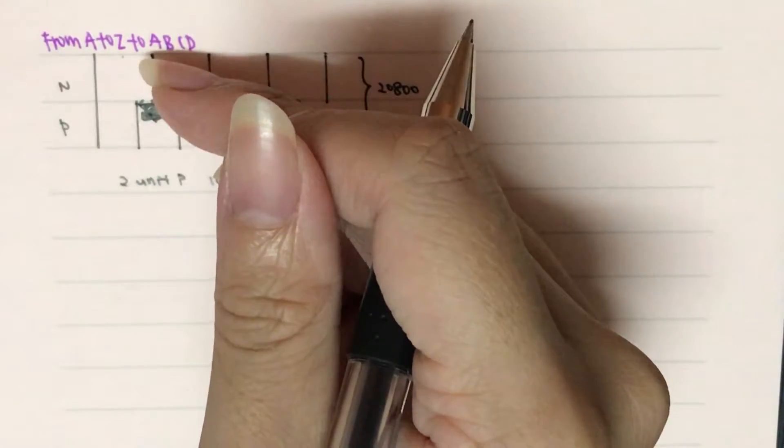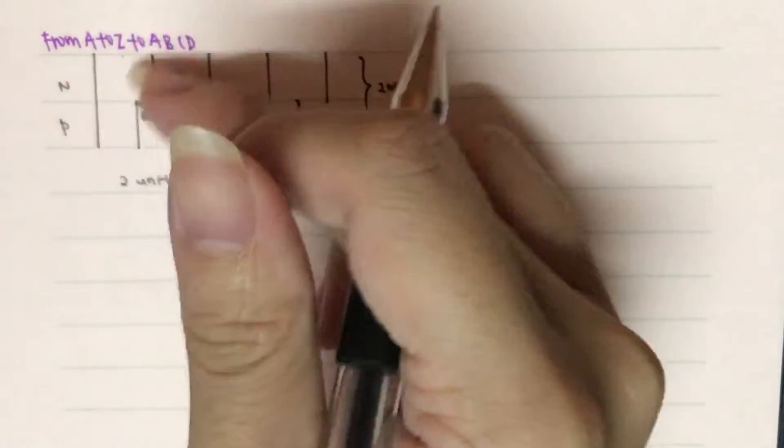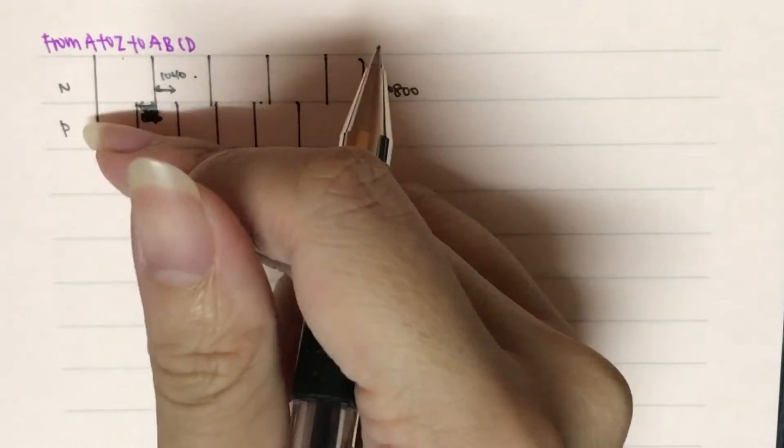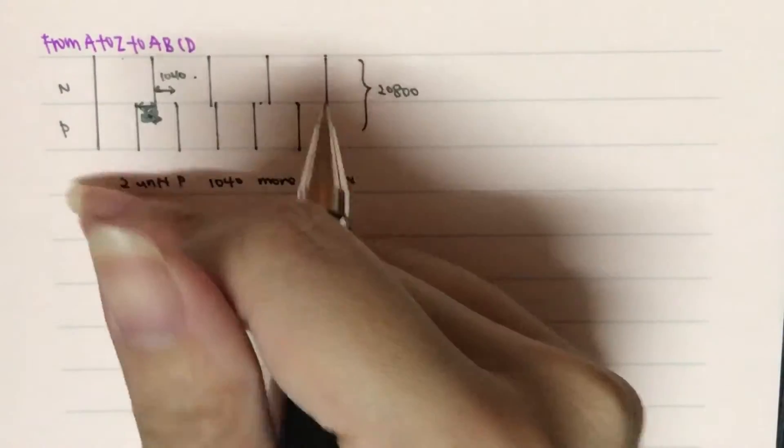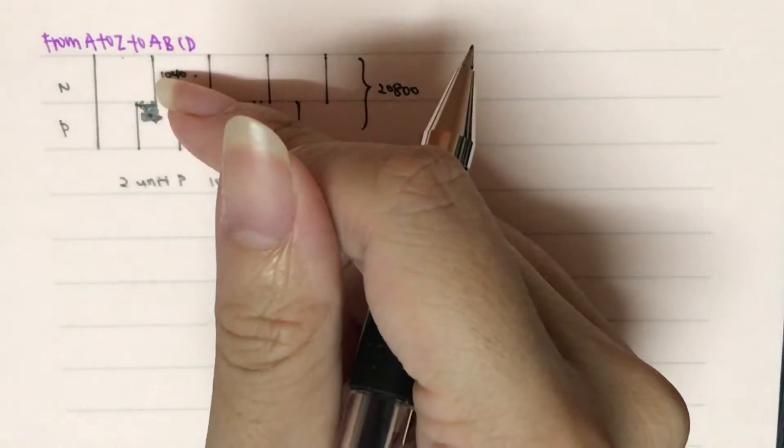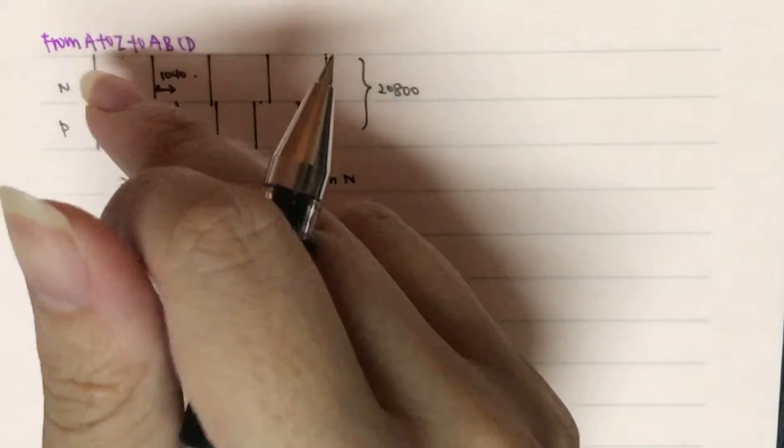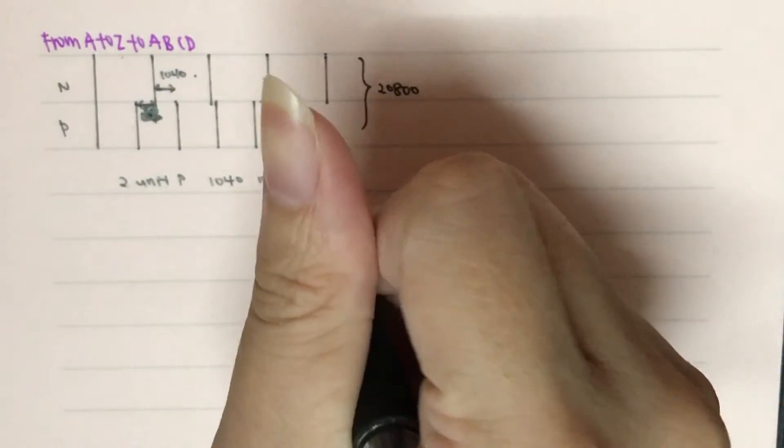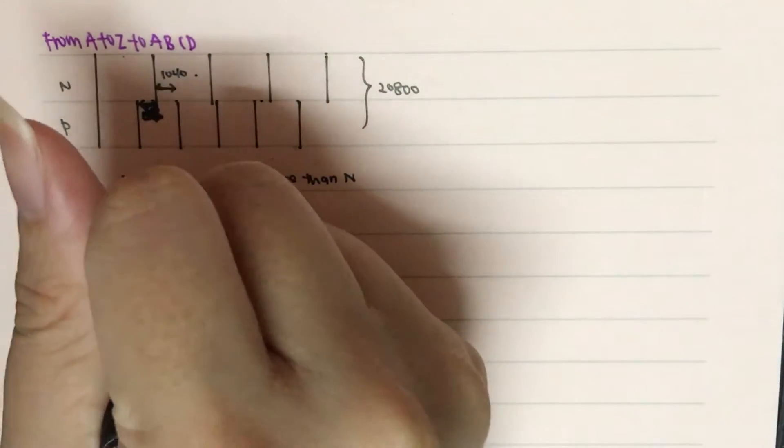So then, we decided to convert N into P. So every unit of N is two units of P minus 1,040. So, if I consider four units of N, over here, I change it to four units of N.